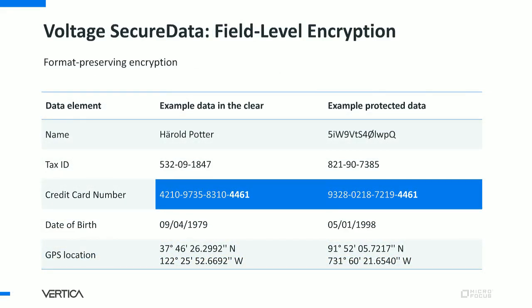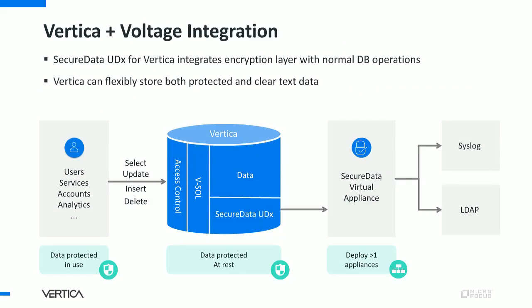How does Voltage work? It encrypts values to things that look like the same format. For instance, a date of birth is encrypted to something that looks like a date of birth but isn't. You can encrypt only the first 12 digits of a credit card number, allowing users to validate the last four. The benefits of format-preserving encryption are that it doesn't increase database size and you don't need to alter your schema. Because of referential integrity, you can do analytics without decrypting the data. You can even combine Voltage with Vertica's row and column access policies for more customized access control.